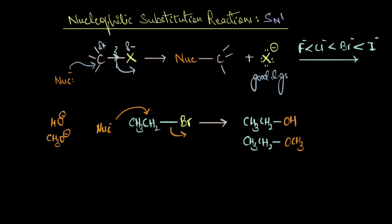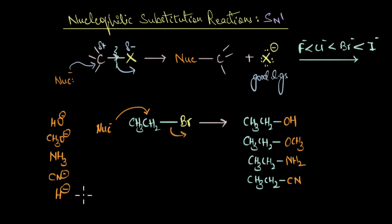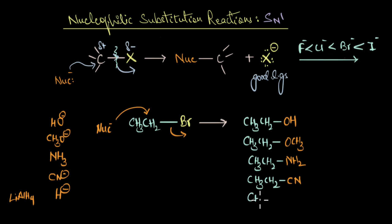If the nucleophile is ammonia, the lone pair of electrons on the nitrogen atom attacks the carbon atom, eliminates the bromide ion, and results in the formation of a primary amine. If we have CN⁻ (cyanide) as the nucleophile, the substituted product would be a primary nitrile, CH₃CH₂CN. If we use a hydride ion — the reactive species in reducing agents like lithium aluminium hydride or sodium borohydride — it acts as a nucleophile and substitutes the bromide ion to give a hydrocarbon; in this case, ethane.